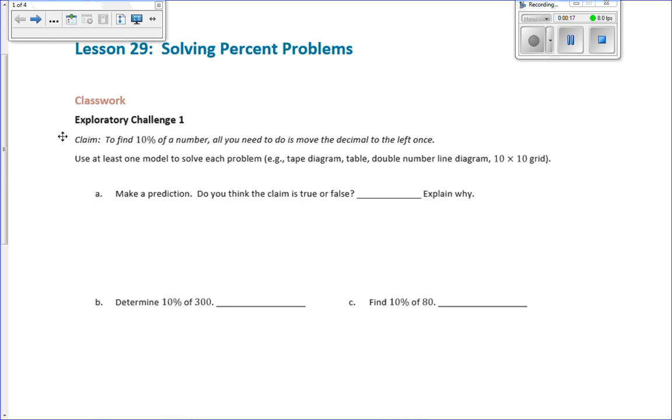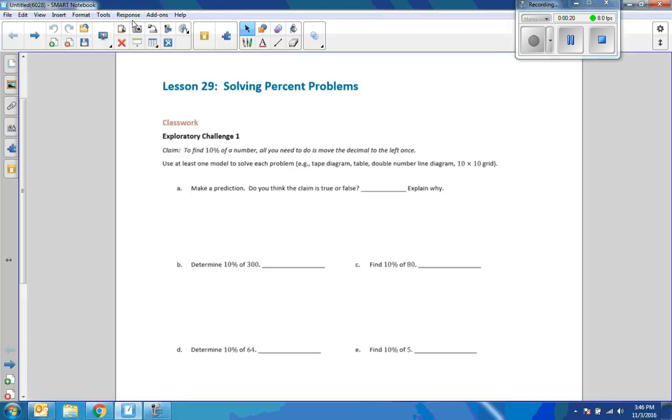Exploratory challenge 1. We have a claim. The claim is to find 10% of a number, all you need to do is move the decimal to the left one place. Use at least one model to solve each problem: a tape diagram, a table, a double number line diagram, or a 10 by 10 grid.